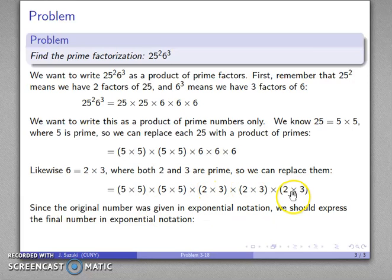I have 1, 2. I have 3 2s. So, that's going to be 2 to the 3rd. And I have 1, 2, 3. I have 3 3s. So, that's going to be 3 to the 3rd. And so, my exponential form of the product is going to be 5 to the 4th, 2 to the 3rd, and 3 to the 3rd. And so, there's my prime factorization of my original number.